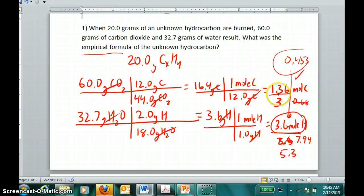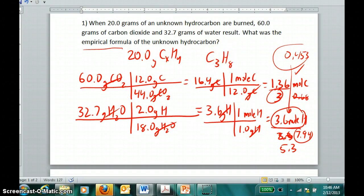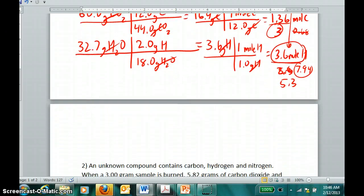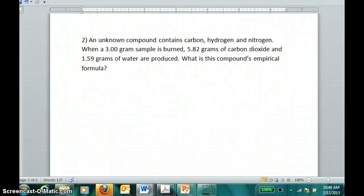This is a 3 to 8 ratio, and our empirical formula is C3H8. As a second example, we have an unknown compound that contains carbon, hydrogen, and a third element, nitrogen. When we burn 3 grams of the sample, so we have 3 grams of this stuff that contains all three elements...